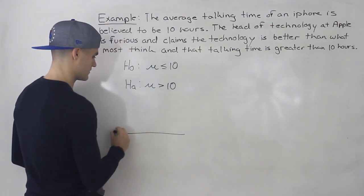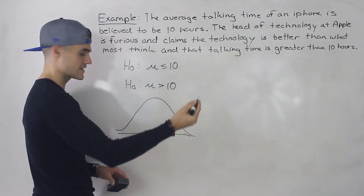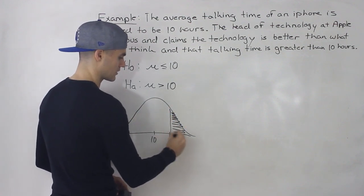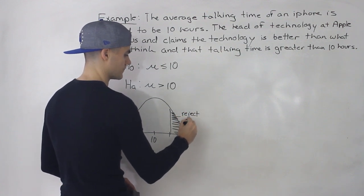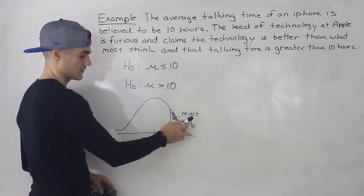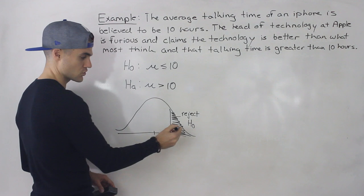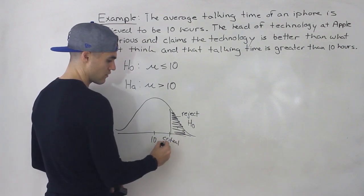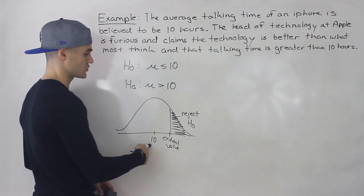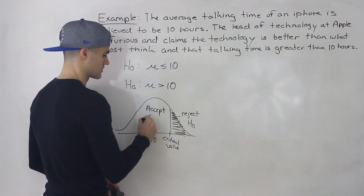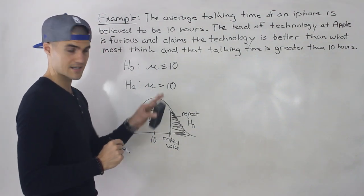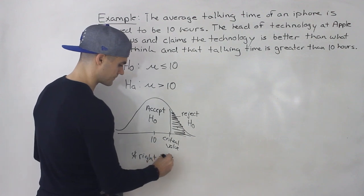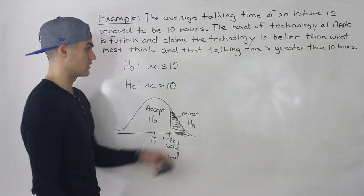The alternative hypothesis is always what we're testing for. The head of technology wants to test that it's greater than 10 hours. This is an example of a right-tailed test, because the average is 10 and the head of technology wants to prove that it's greater. So we're going to be rejecting the null on the right side. They don't care if it's less than 10 — they want to show it's greater, so the critical value is going to be greater than the currently accepted average.